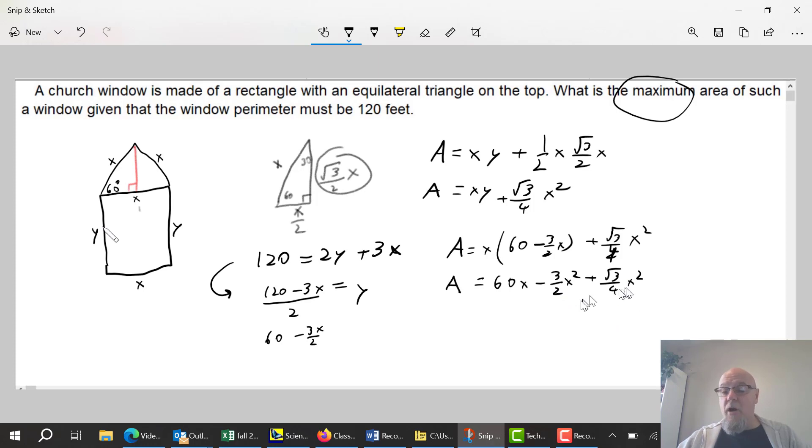So A prime is equal to 60 minus 3X plus root 3 over 2 X. I differentiate it, set it equal to 0, solve for X. So that's going to be 60 equals 3X - it's a positive when it goes over to the other side of the equal sign - minus root 3 over 2 X.